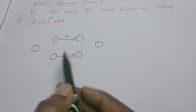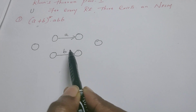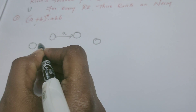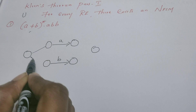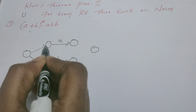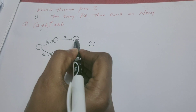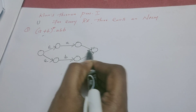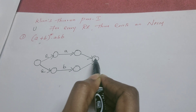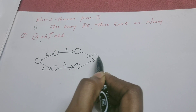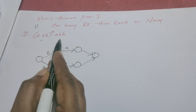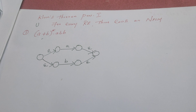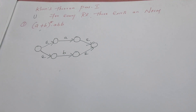We are going to construct the whole NFSM part by part, converting these two regular expressions into a union b. We need a new start state, and that new start state will be connected to these existing two machines via epsilon transitions. Similarly, from these two states we are connecting to a final state via epsilon transitions. As of now the machine recognizes a union b.